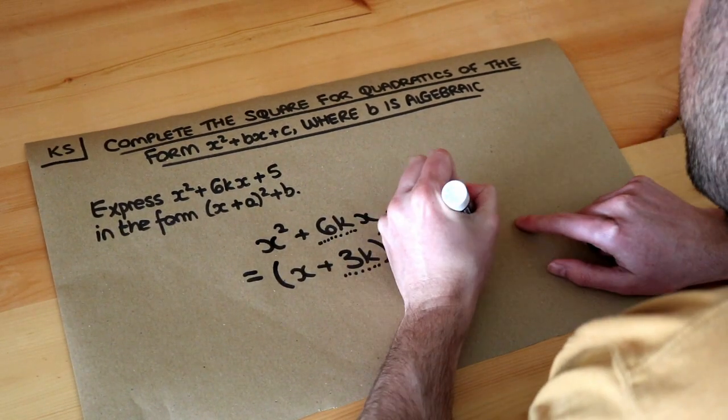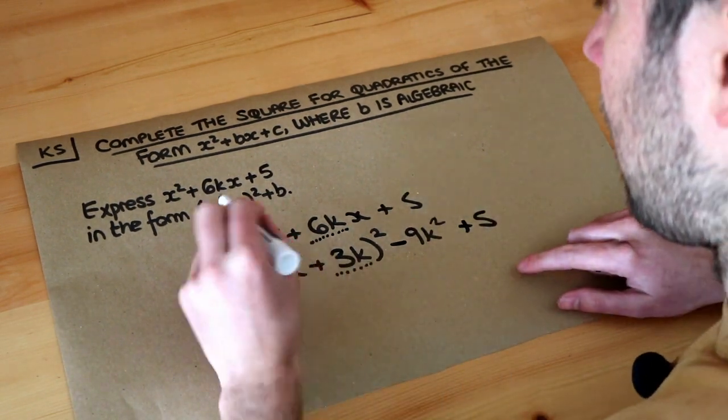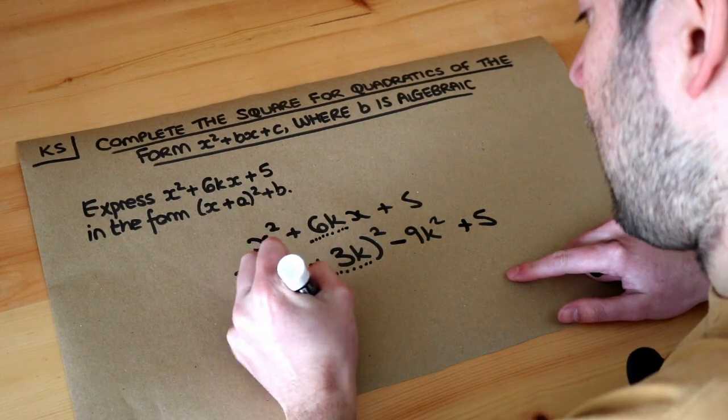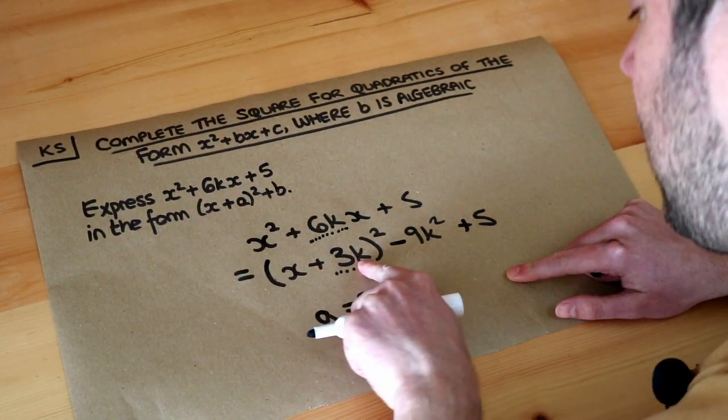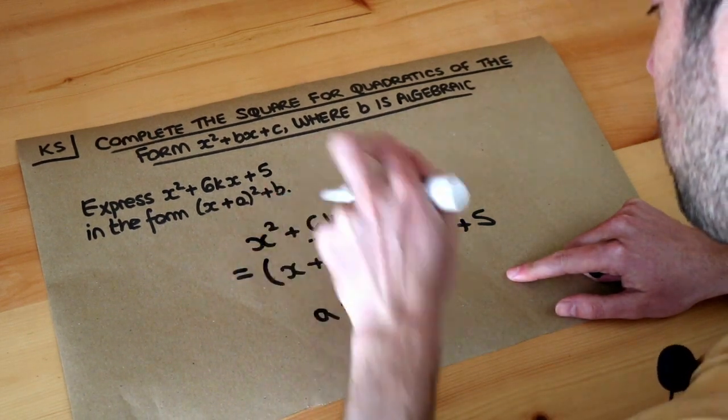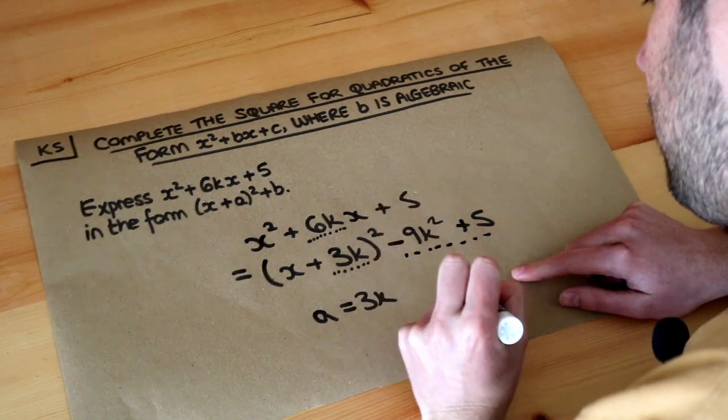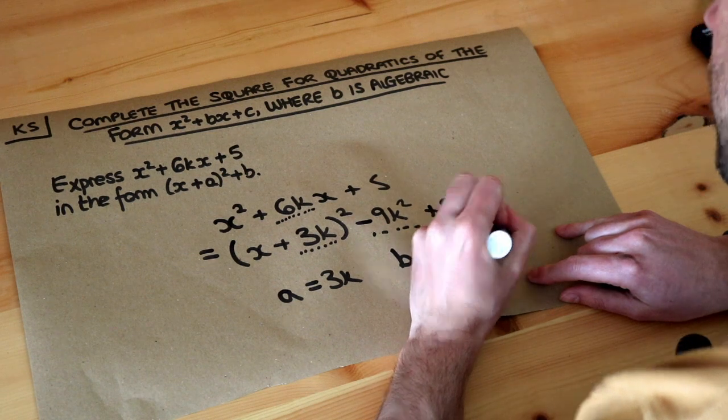Now we still have this +5 here, and that's the final answer—we can't simplify further. We can identify a as 3k because it's (x + a) = (x + 3k), and b is everything after the squared, so b = -9k² + 5. And we are done.